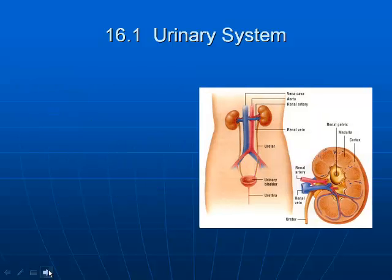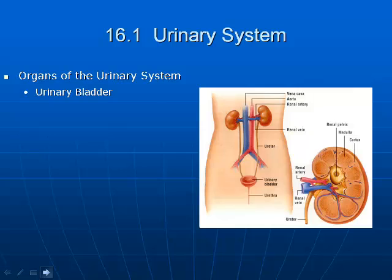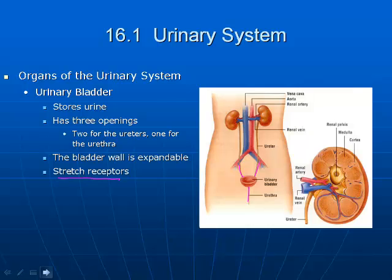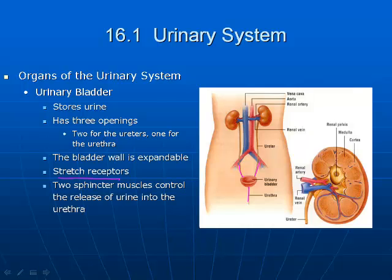The urinary bladder is where urine is stored before being expelled. It has three openings — one from each ureter and one leading into the urethra. The bladder wall is expandable and elastic, so it doesn't simply burst when full. It contains stretch receptors, similar to those in our lungs, which signal to the brain that urination is needed when a certain volume is reached. Two sphincter muscles control the release of urine into the urethra.